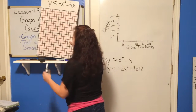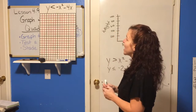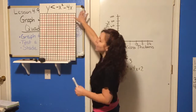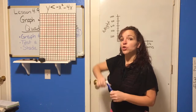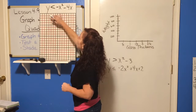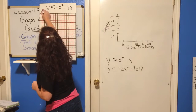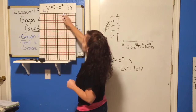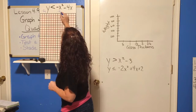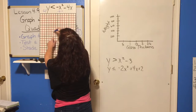I'm going to go pretty quickly through the graphing process. If we have y is less than negative x squared minus 4x, step one is just to graph it. Because this is in standard form, we use negative b over 2a. So negative b over 2a is negative of negative 4, which is positive 4, over 2 times negative 1. That gives 4 over negative 2, which is negative 2 — that's the x-coordinate of the vertex.